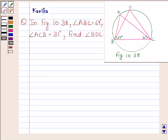Hi and welcome to the session. Let us discuss the following question. The question says in figure 10.38, this is the figure 10.38, angle ABC is equal to 69 degrees, angle ACB is equal to 31 degrees, find angle BDC. We have to find this angle.